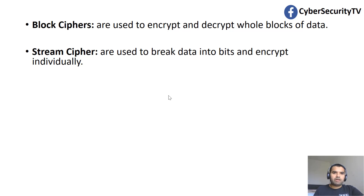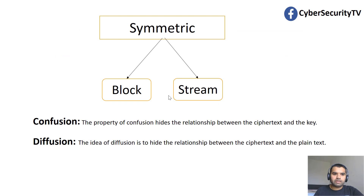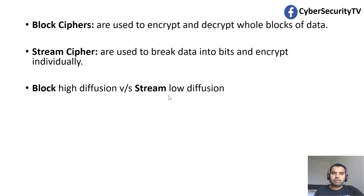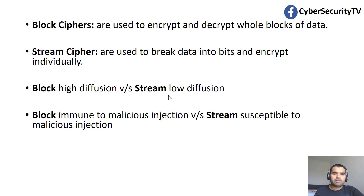Now let's talk about some advantages and disadvantages of block versus stream cipher. Block cipher is high in diffusion — the idea of diffusion being to hide the relationship between ciphertext and plaintext — while stream cipher is very low in diffusion. Block cipher is also immune to malicious injection, while stream cipher is not. It's harder to inject malicious data within a block than between individual bits, making block cipher more difficult for attackers to exploit with malicious injection attacks.